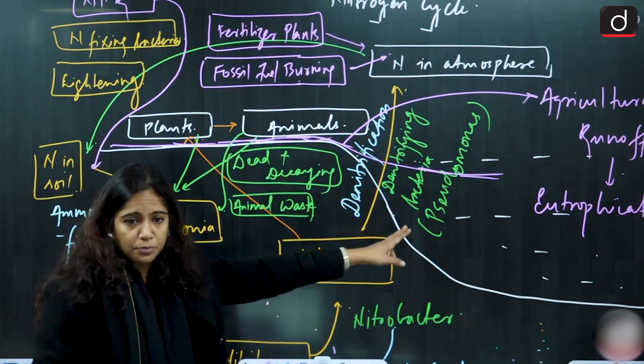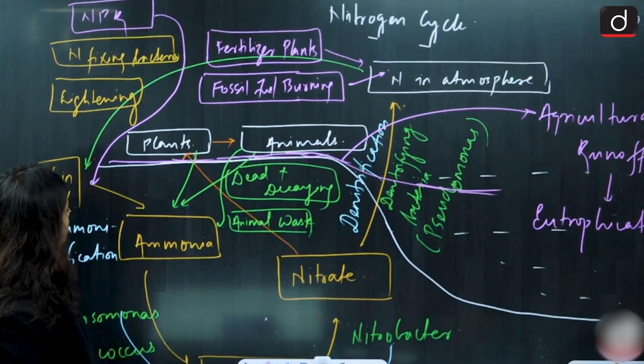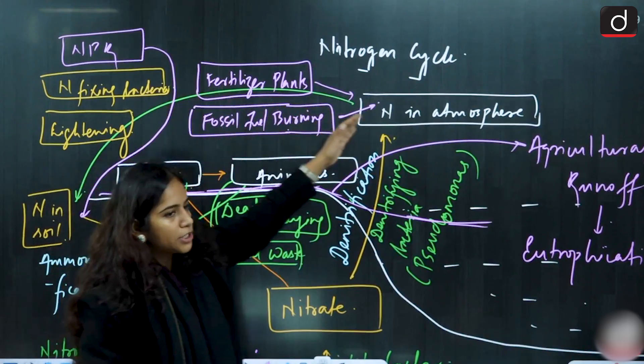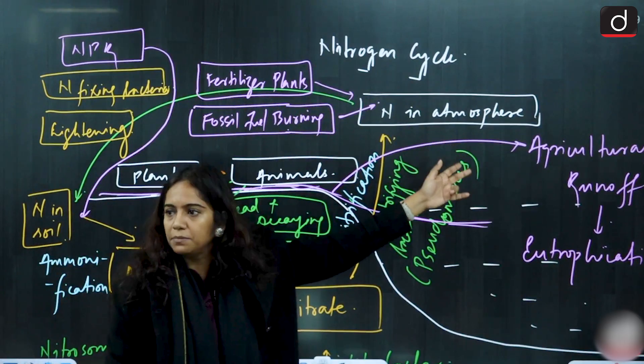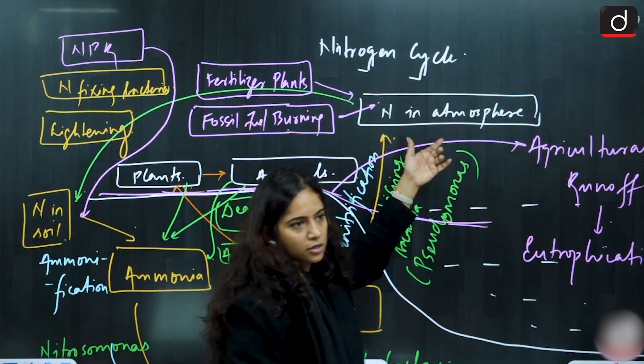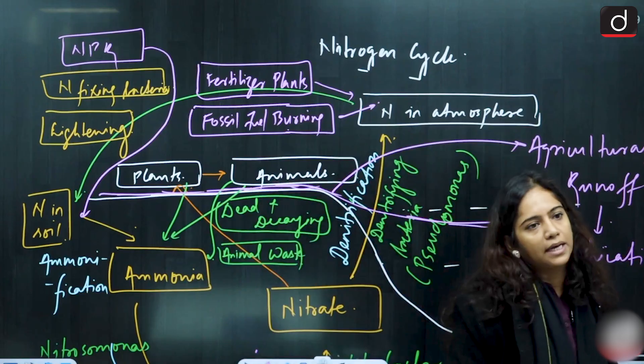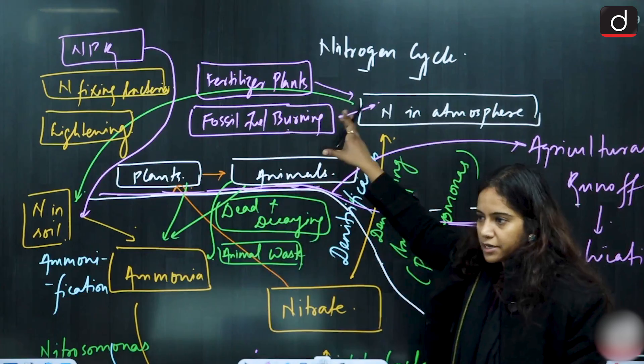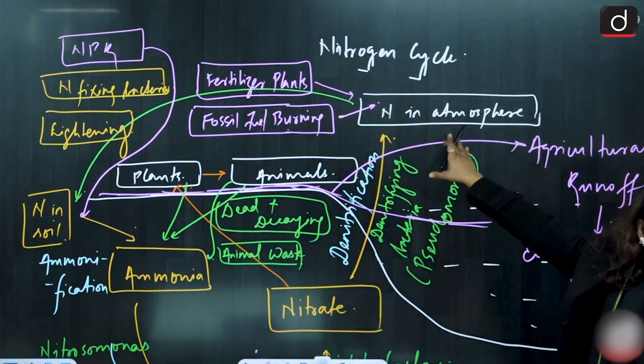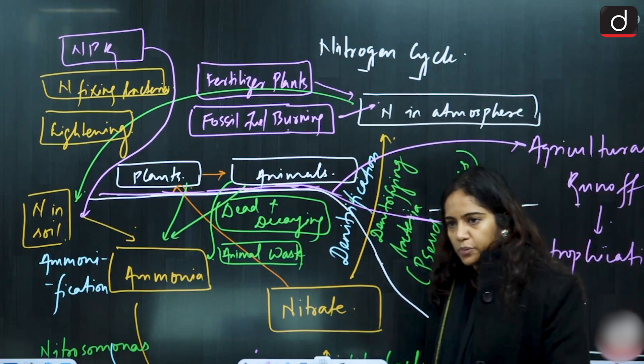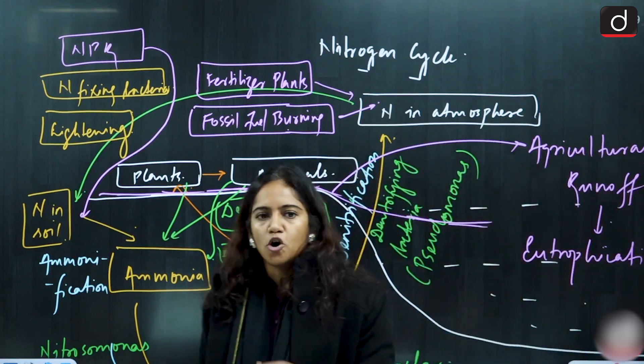So that is one problem that is happening. Another problem that is happening because of this fertilizer plants that are operating is that nitrogen is increasing in the atmosphere through emissions. Also, through fossil fuel burning that are happening across the globe, that is through vehicles as well as through the industries. So these fossil fuel burning and the fertilizer plants are further increasing the nitrogen concentration in the atmosphere. Now, nitrogen in the atmosphere when it is present, it is in the form of oxides.